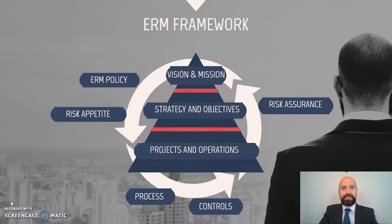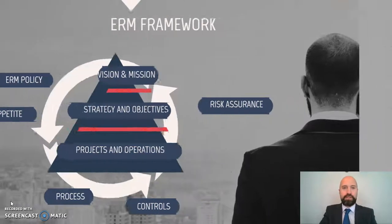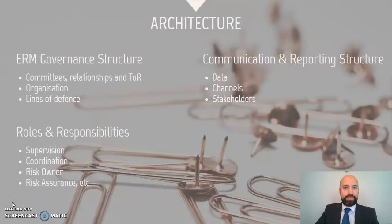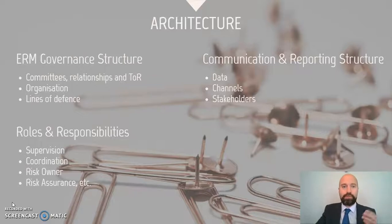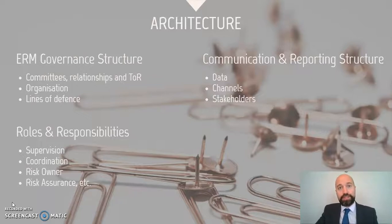Let's have a deeper insight into each one of the three elements forming part of the framework. The first one is the risk management architecture. Within it we find details on the enterprise risk management governance structure, containing details on the committees, the relationships and the terms of reference governing those committees. We also find details on the organization and the lines of defense — usually three: management, risk management and internal audit. Within the risk management architecture we also find details on the roles and responsibilities: who is responsible for supervision and coordination, who is to be risk owner — the one accountable for identifying, managing, monitoring and reporting on each significant risk — and finally who is responsible for risk assurance. We will also find details on the communication and reporting structure: which data is to be communicated, through which channels, and to which stakeholders.